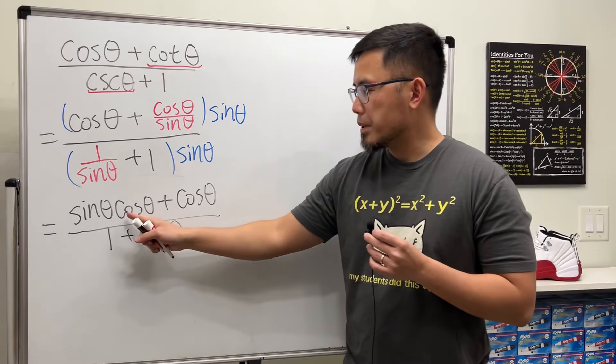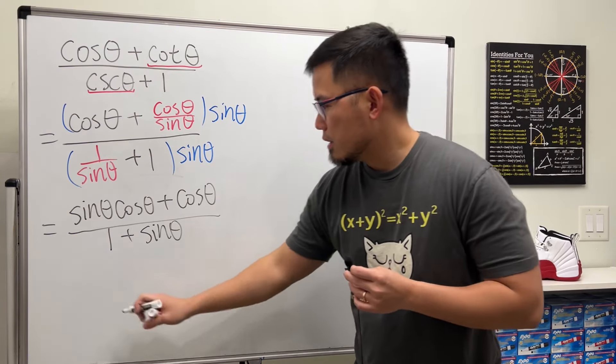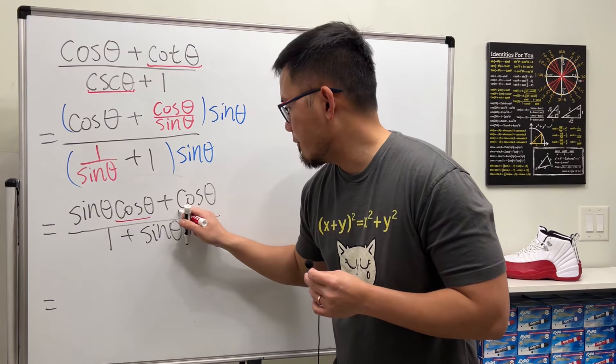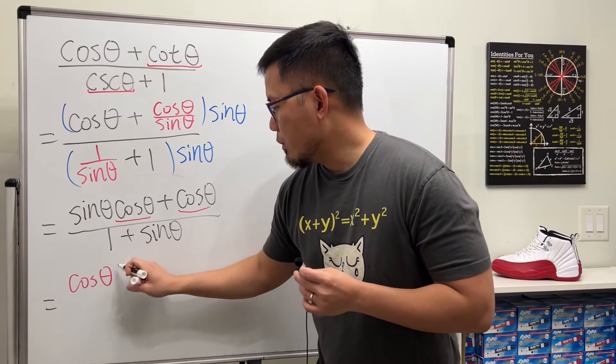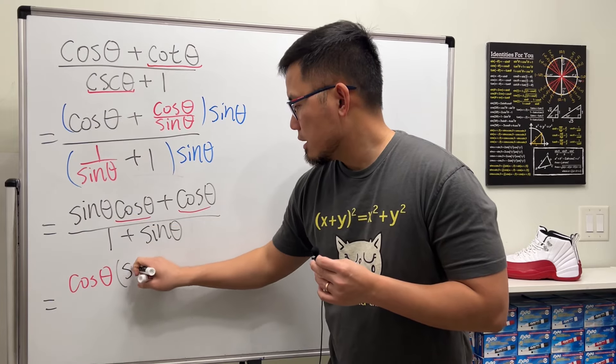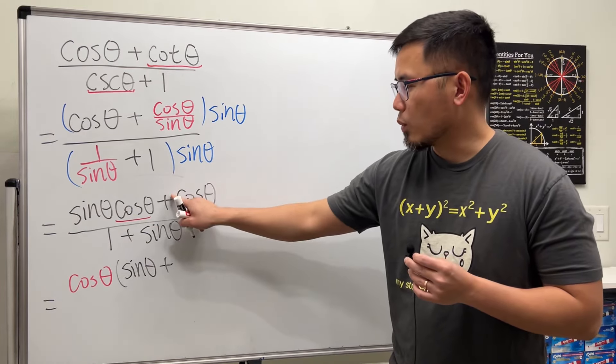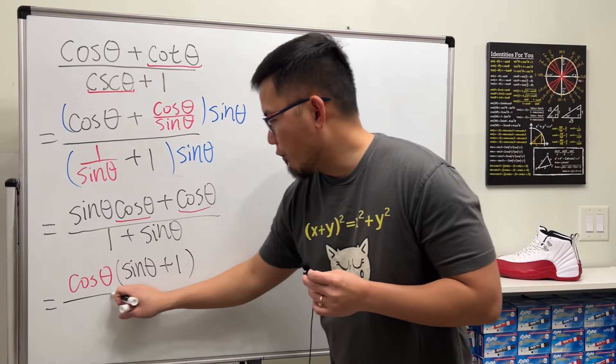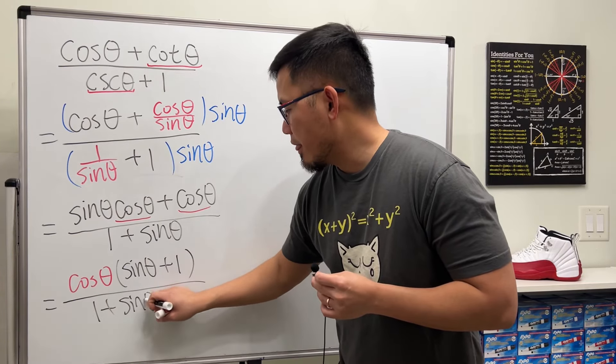Well, as we can see, on the top here we have cosine theta and cosine theta. We can factor it out. So we will get cosine theta. Right? Again, this is the common factor, cosine theta. And then we will have here sine theta left plus, keep in mind that there's a 1, so it's plus 1. And then over the denominator, 1 plus sine theta.